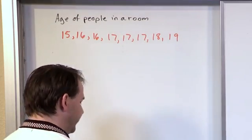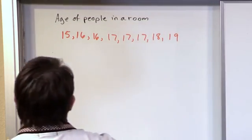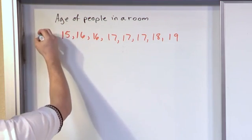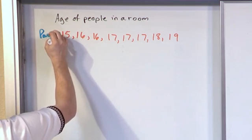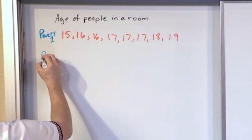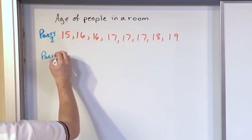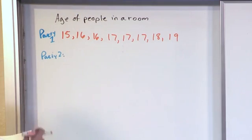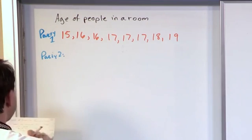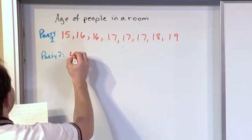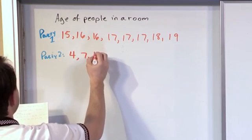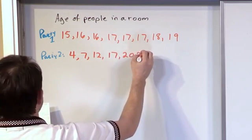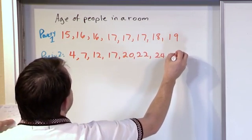To contrast this, let me do the same experiment. This is party number one. Now let's look at party number two. Again, I'm going to choose eight people at random: a four-year-old, a seven-year-old, a 12-year-old, 17, 20, 22, 24, and 28.